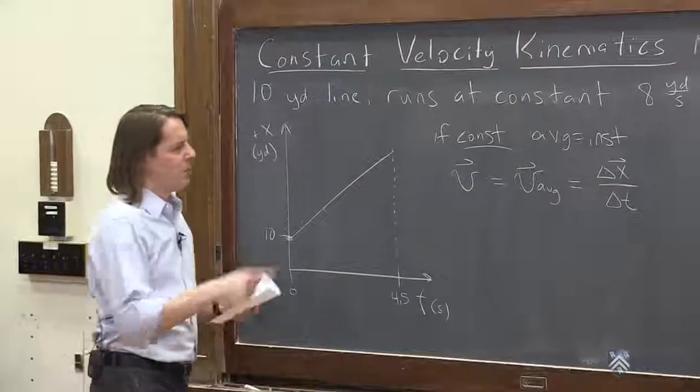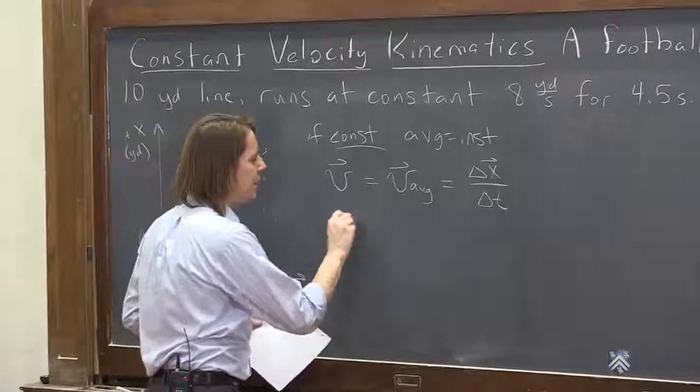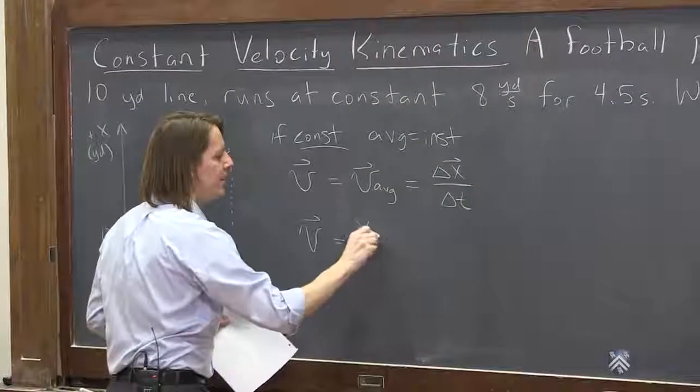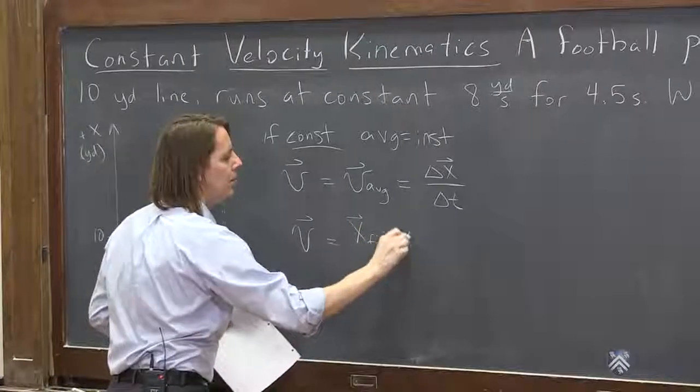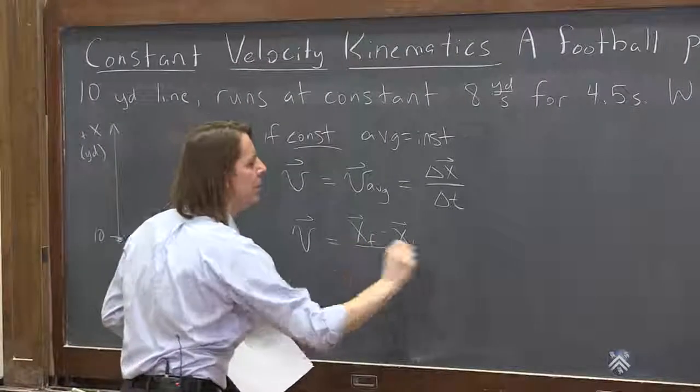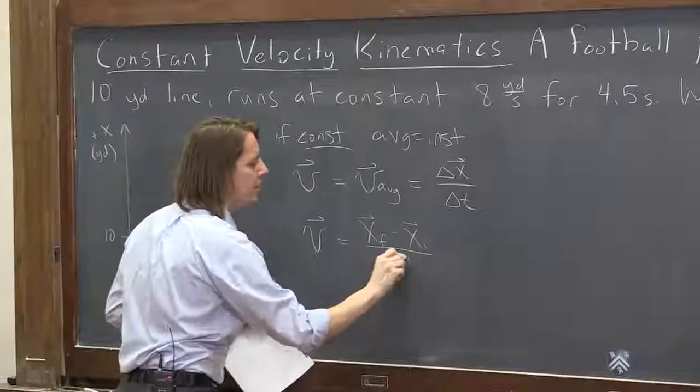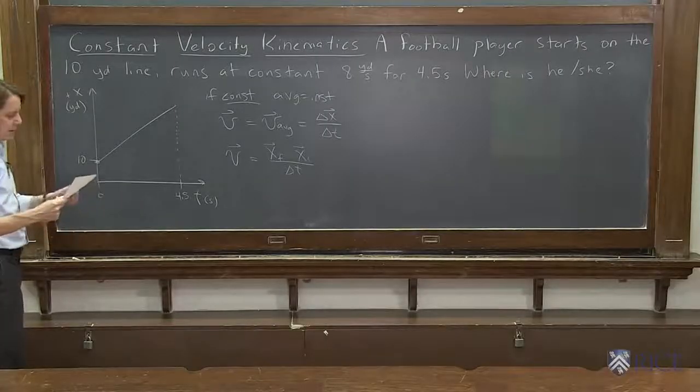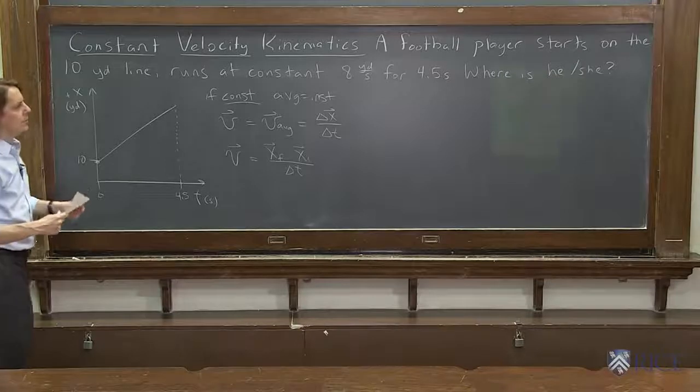So we can go from there. We can remind ourselves, what is v? v is just v, the velocity. What is this? This is the final position minus the initial position over delta t, like that. And then we can... we have a question.